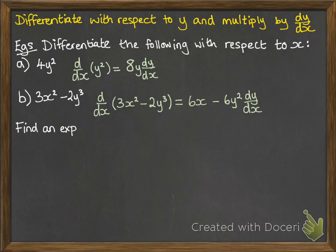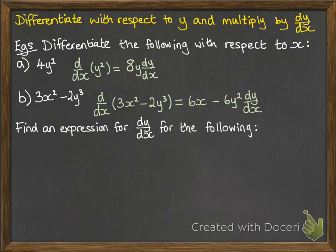Now, take this example. We're being asked to find an expression for dy by dx for the following. So we'd actually need to rearrange these into dy by dx equals. So this one, this is very similar to part b, but we've got it equal to 1. So if we differentiate that, we get 6x minus 6y squared dy by dx equals 0. Since you differentiate that 1, you get 0.